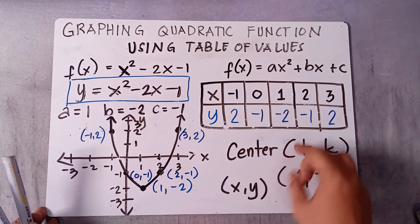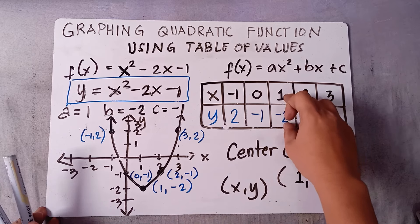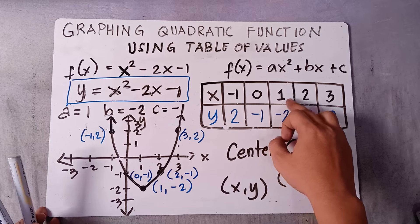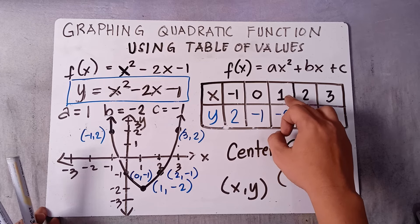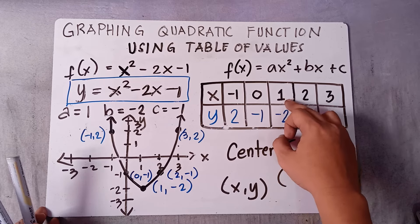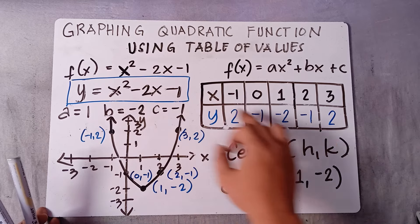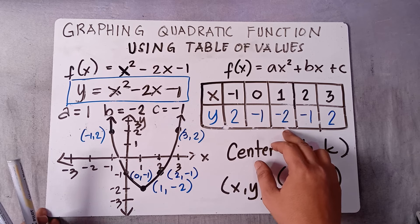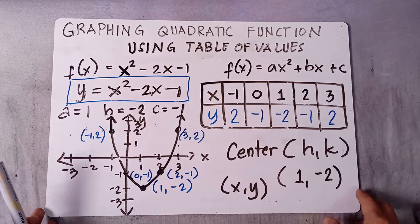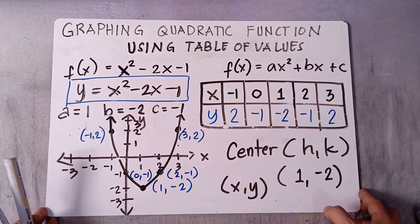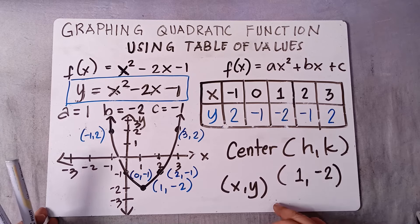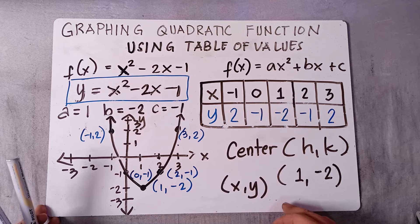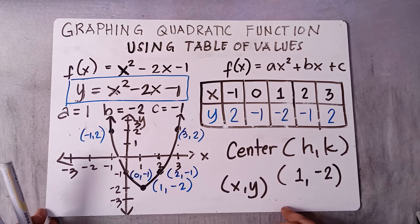That's how you graph a quadratic function using tables of values. You need to find the vertex first — the center h and k — where h = -b/2a is the axis of symmetry. Once you get x, substitute into the equation to get y. Have a great day! If you like this video, please subscribe to our channel and share it with your classmates and friends. Goodbye!